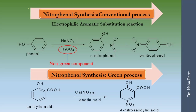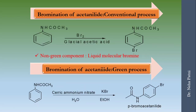The third example is nitrophenol synthesis. In the conventional process, which is an electrophilic aromatic substitution, sulfuric acid is used — a non-green compound. In the green process, no sulfuric acid is used; instead a solid-state catalyst is used to obtain the nitro compound.